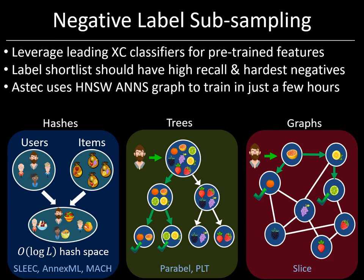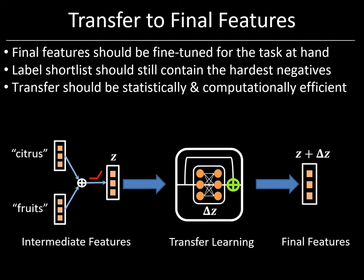In Aztec, we use a significantly improved version of the graph-based technique in Slice, and this can be trained in under a couple of hours across all datasets. As we will show in the results section, this is significantly more accurate and scalable than just replacing the fully connected output layer with the Slice classifier directly. In the third module, we use transfer learning to fine-tune the intermediate features Z and learn final features Z plus ΔZ.